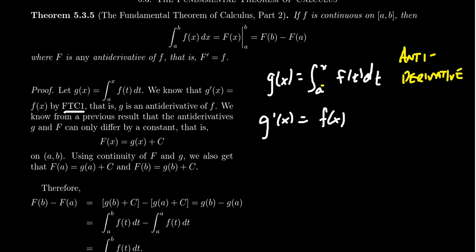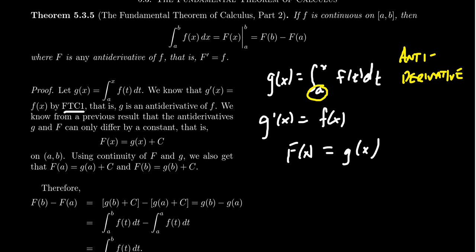We've seen the plus c before. This constant keeps track of different antiderivatives — if we had different values of a, we would get different antiderivatives. All antiderivatives only differ by a constant. So if capital F and lowercase g are both antiderivatives, capital F(x) will equal g(x) plus a constant. Any antiderivative of little f will look like g(x) plus a constant.